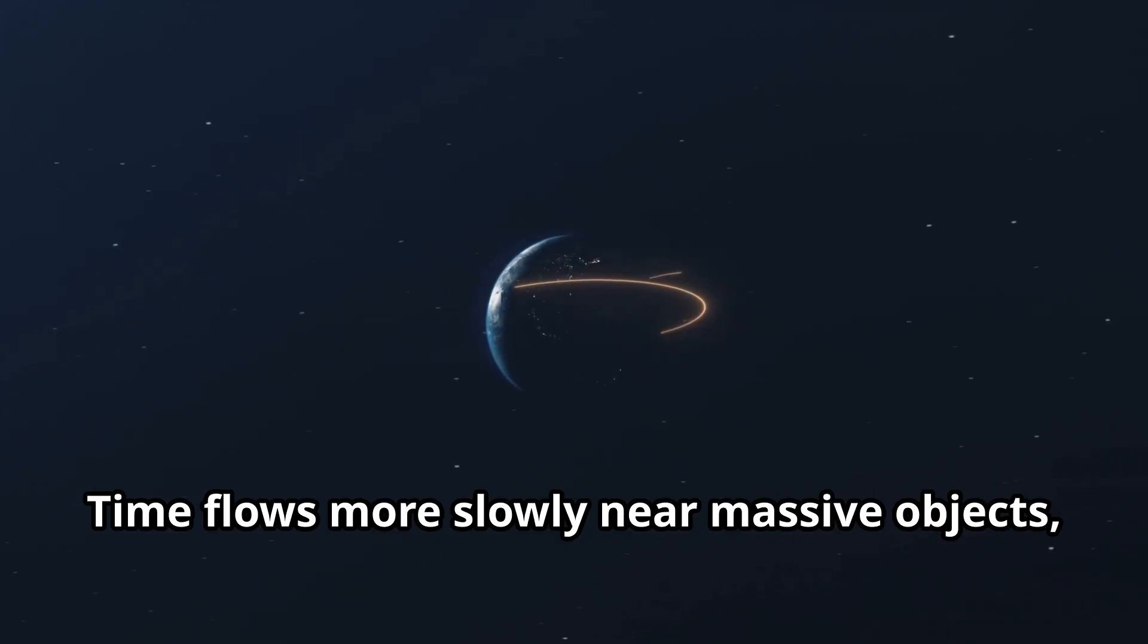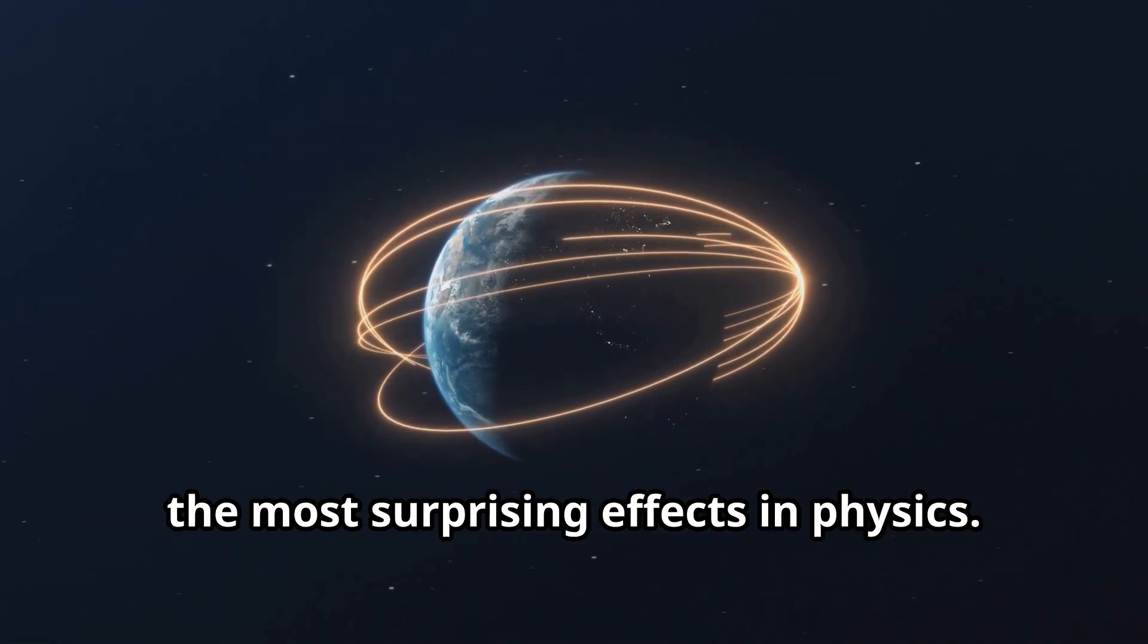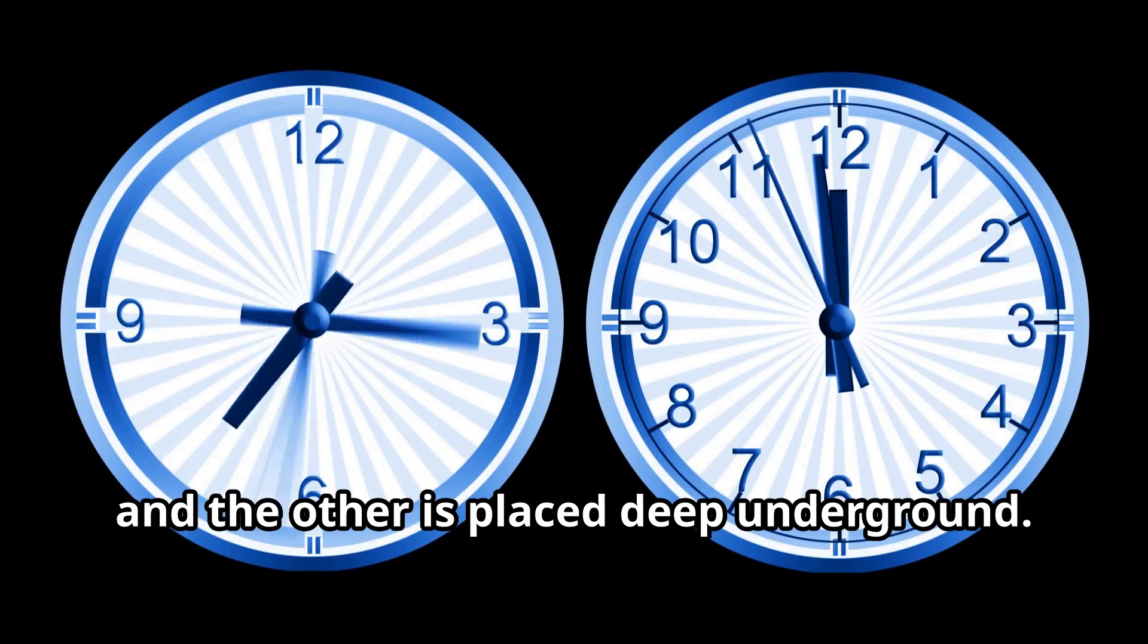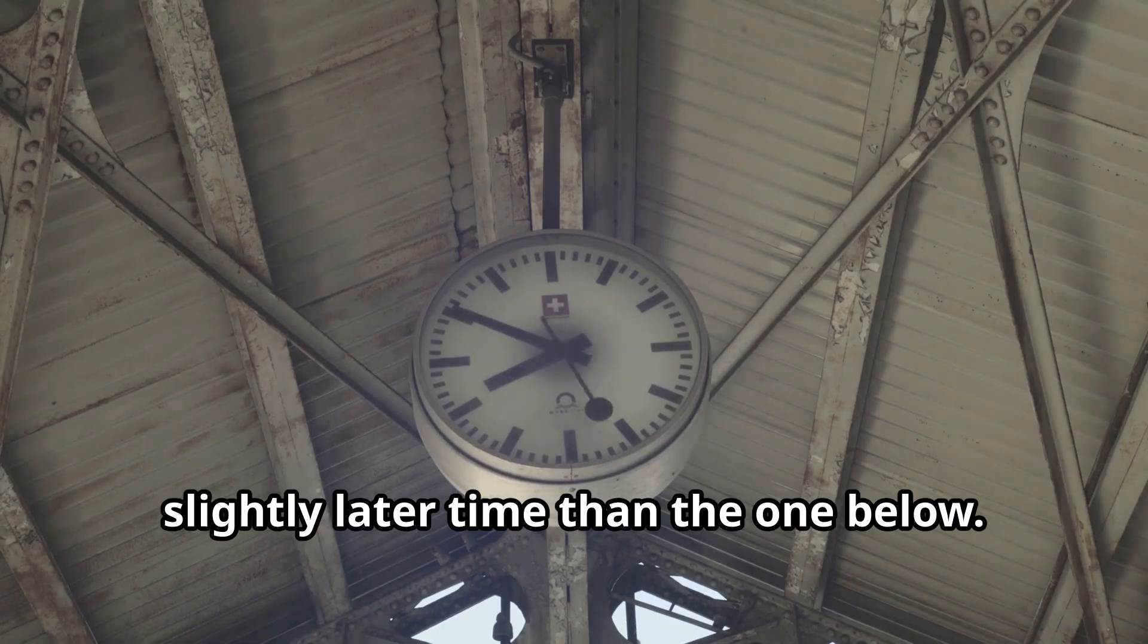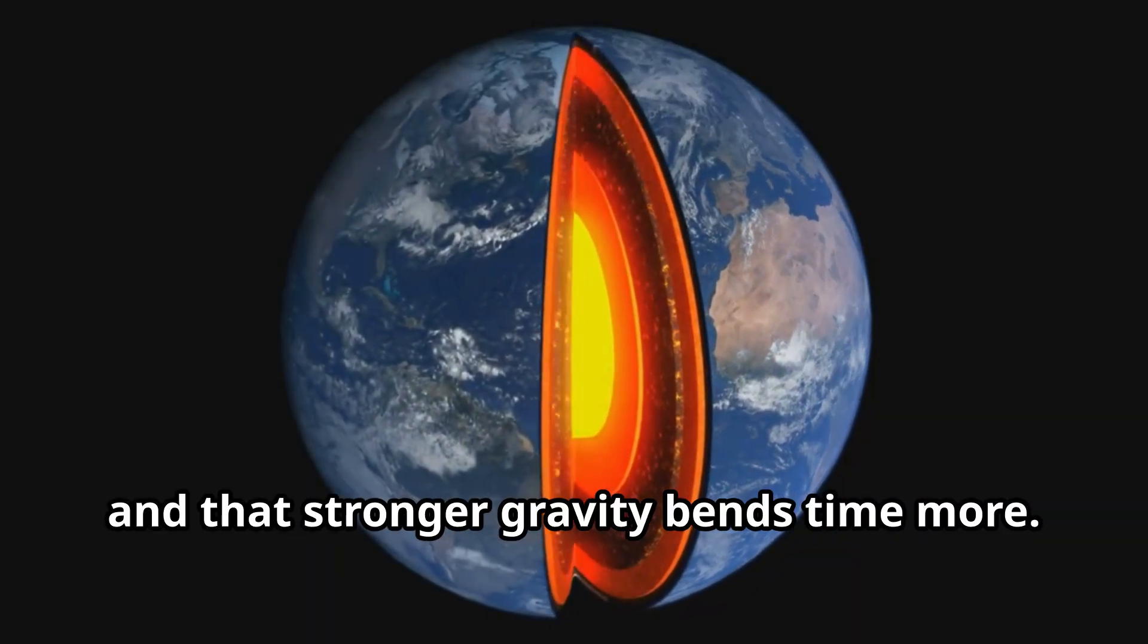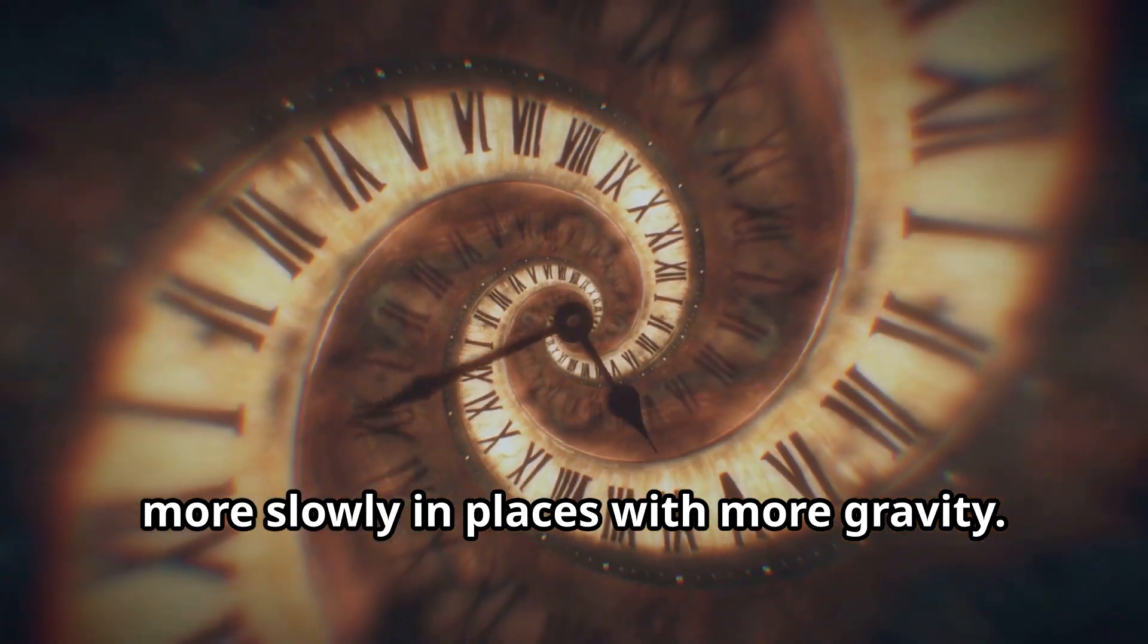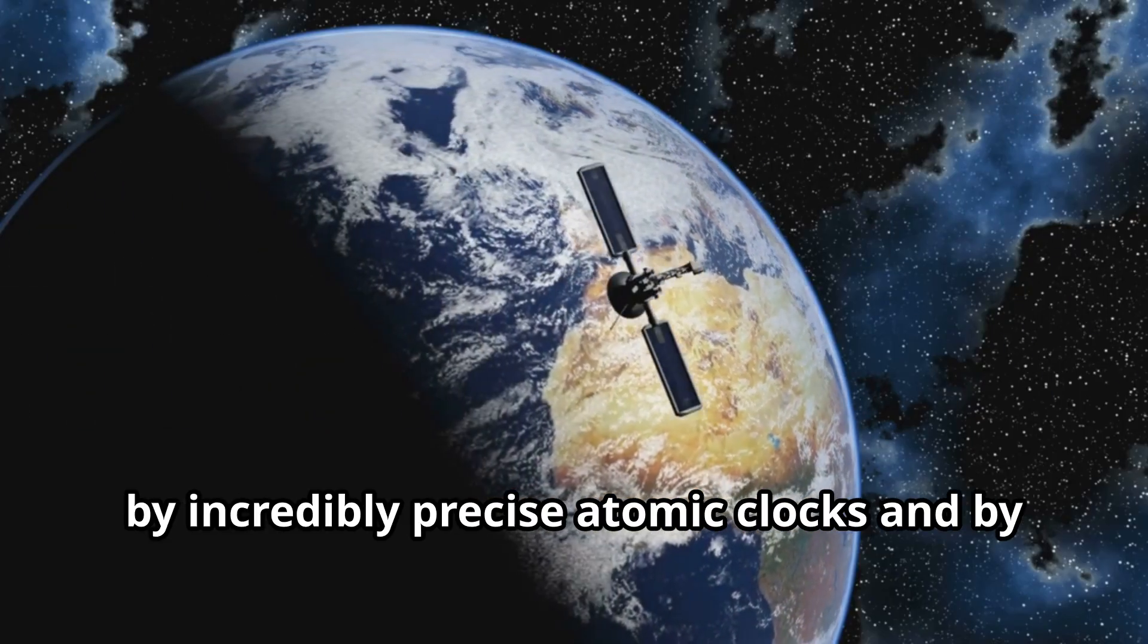Time flows more slowly near massive objects, and this simple truth leads to some of the most surprising effects in physics. Imagine two identical clocks. One is placed on the top of a mountain, and the other is placed deep underground. After a while, the clock on the mountain will show a slightly later time than the one below. This happens because Earth's gravity is stronger closer to its center, and that stronger gravity bends time more. The result is that time actually ticks more slowly in places with more gravity. This is not just an idea. It's been proven by incredibly precise atomic clocks and by satellites in space.